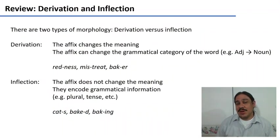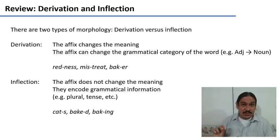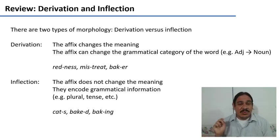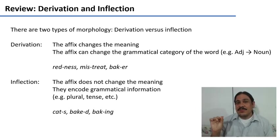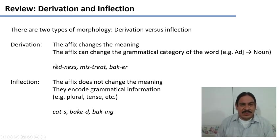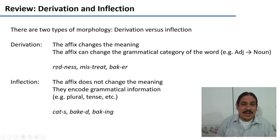Before we look at compounds, let's review the two main types of morphology: derivational morphology and inflectional morphology. In derivational morphology, the affixes change the meaning of the root. For example, in 'redness,' we have the root 'red' and then the suffix '-ness.' The '-ness' does change the meaning a little bit, because 'red' is a color and 'redness' is a characteristic of something.